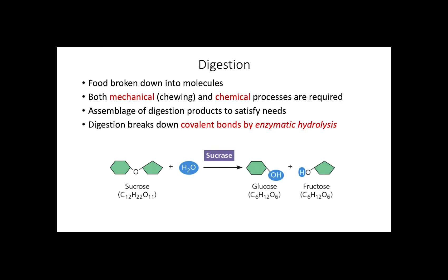Digestion is the second stage of food processing, and this is where food is broken down into molecules that are small enough for absorption. Mechanical processes like chewing and grinding, as well as chemical processes, are employed during digestion. Animals cannot directly use macromolecules in food, hence the need to break food particles down. Smaller particles that pass through plasma membranes are then brought together to satisfy the nutritional needs of an organism. Digestion works by a process called enzymatic hydrolysis, where water molecules are used to break down covalent bonds.